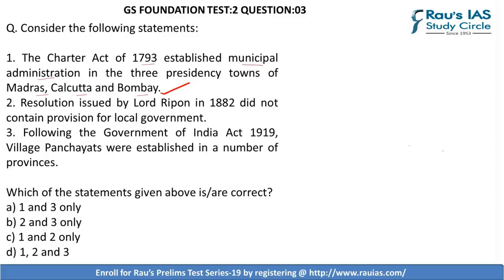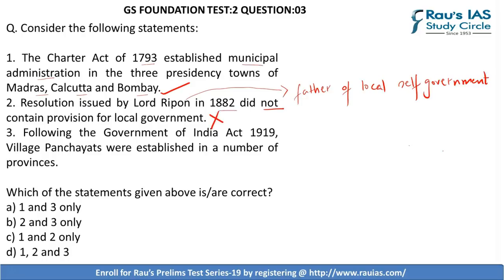Second — the resolution issued by Lord Ripon in 1882 did not contain provision for local self-government. We know that Lord Ripon is famously called the father of local self-government in India. Thus, it is obvious that the second statement is wrong, as his resolution of 1882 was all about local self-government in areas governed by the British. Third — following the Government of India Act 1919, village panchayats were established in a number of provinces. This statement is correct.